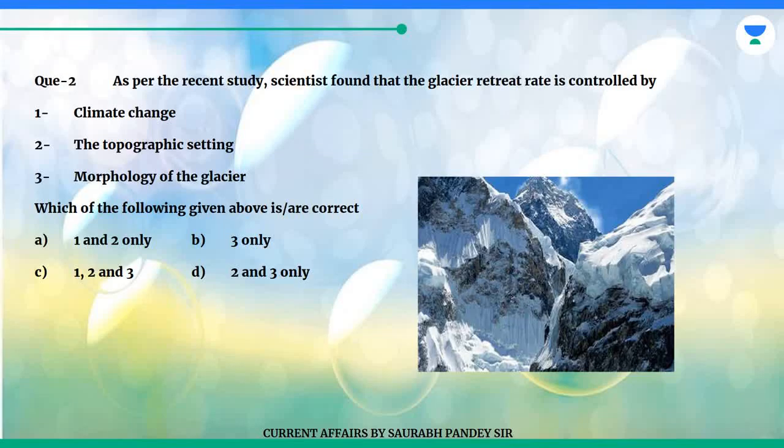Question 2: As per a recent study, scientists found that the glacier retreat rate is controlled by: 1. Climate change. 2. The topographic setting. 3. Morphology of the glacier.